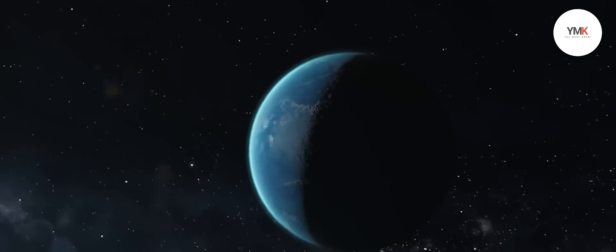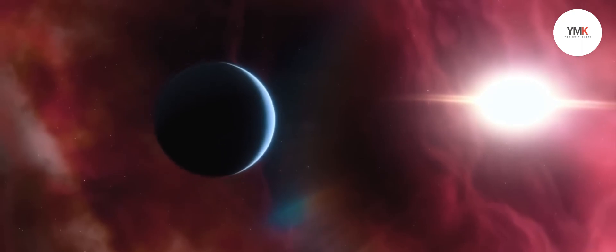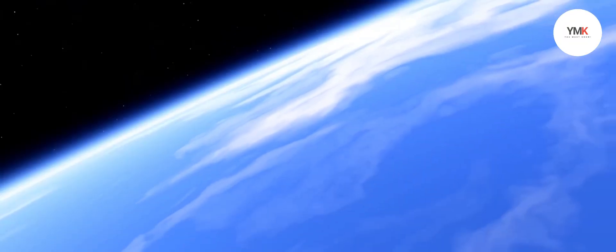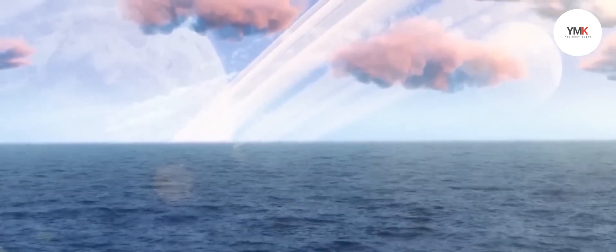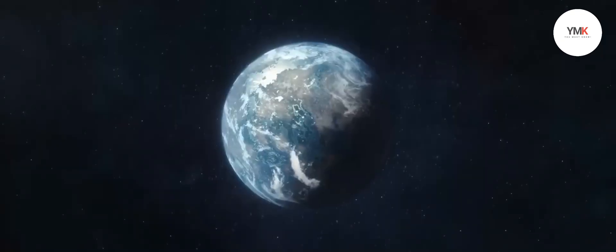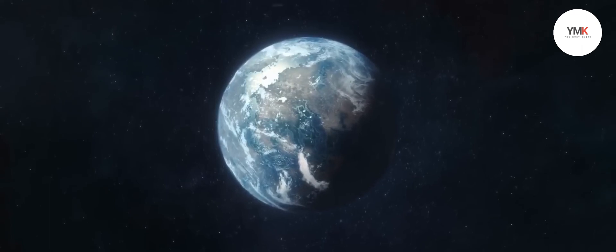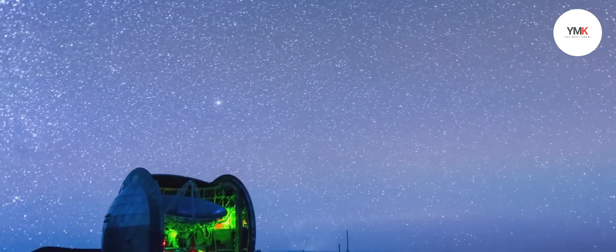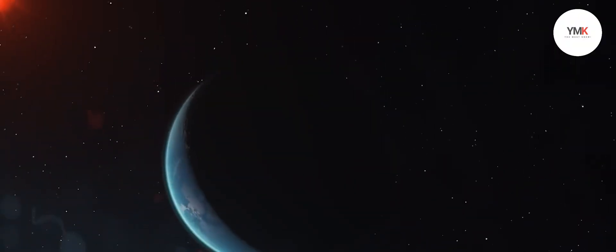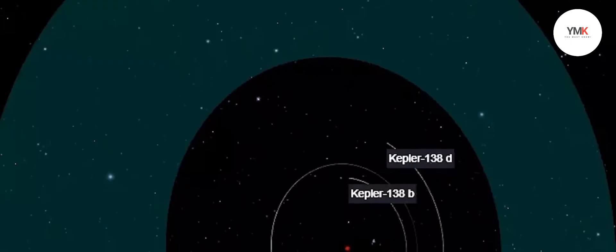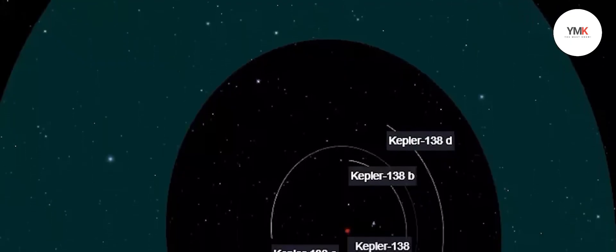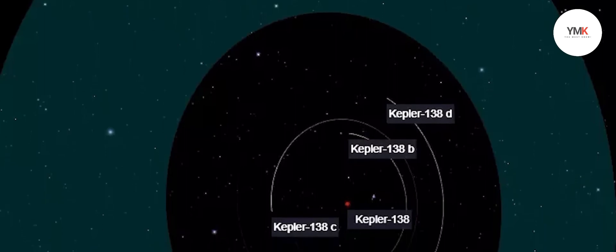In the Kepler-138 star system, it is estimated that there are still hidden planets. While previous Kepler telescope observations only showed the transit of three small planets around Kepler-138, astronomers were surprised because observations using the Hubble and Spitzer telescopes showed that there was a fourth planet in the system, namely Kepler-138e. This new planet is small and farther from its star than the previous three planets.